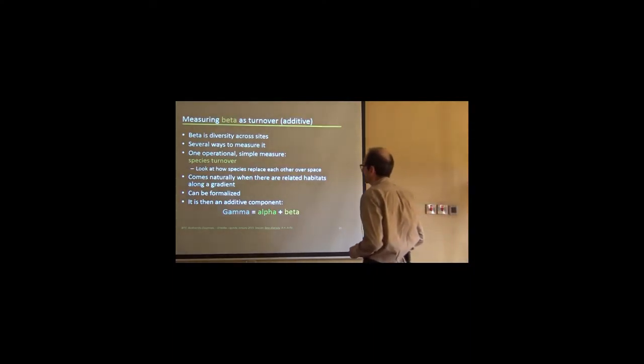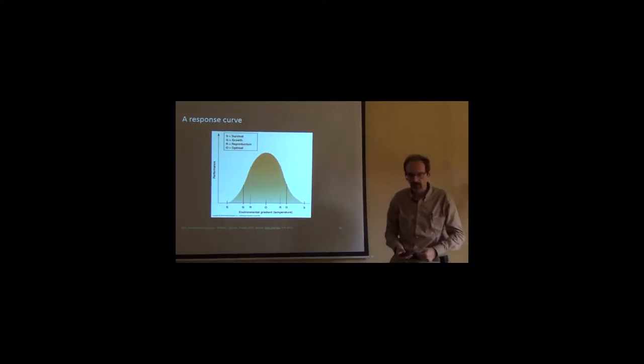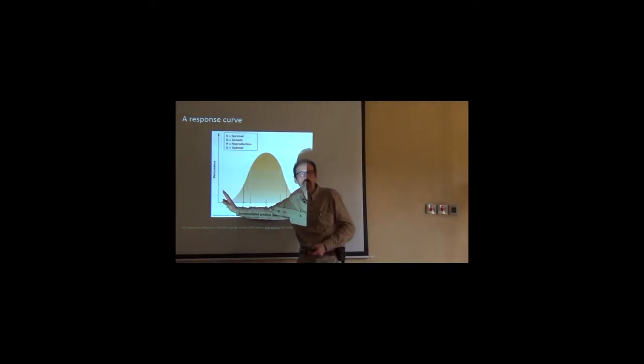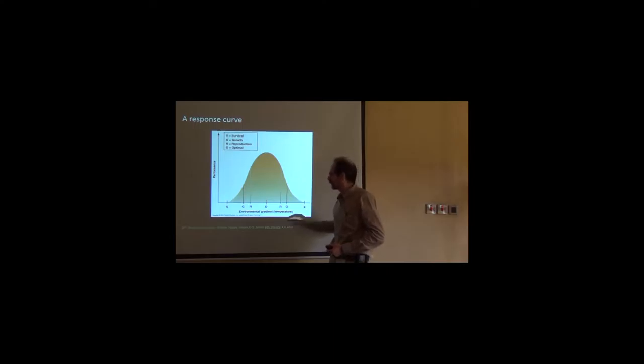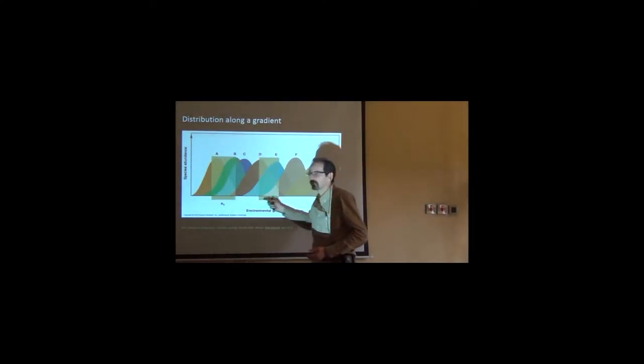A species is distributed along a gradient according to some kind of response function. It could be abundance. So this is the ideal state for the species. Town's silverback gorilla, in the example before, has an ideal habitat. Up there in the mountains, in the misty mountains, with lots of fog, rain, fruit, and no humans, if possible. That's the optimal position. It doesn't go below that because it's too warm. It doesn't go much upper because probably there will be less fruit. So it has a niche along that gradient. So different species will have different gradients along that niche.